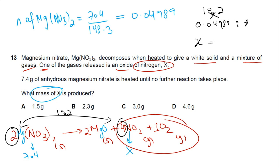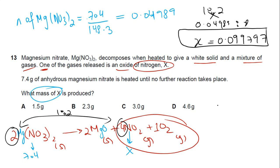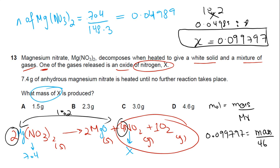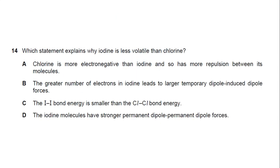Now using moles = mass / Mr: moles of NO2 = 0.09979, Mr of NO2 = 46. Mass = 0.09979 × 46 = 4.59 g, approximately 4.6 g. The answer is D.